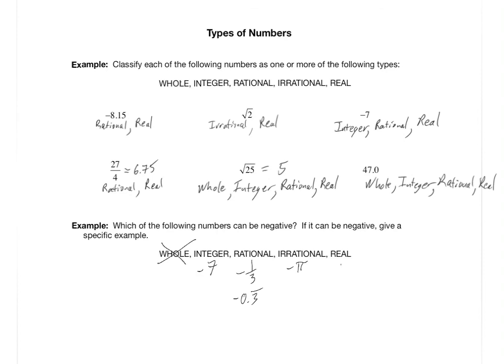One more example: negative 4,342.81927. Any number that can be written as or approximated by a decimal is considered a real number.